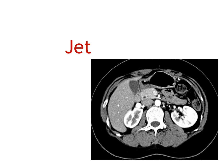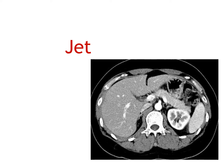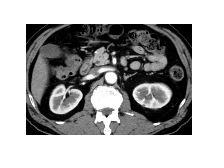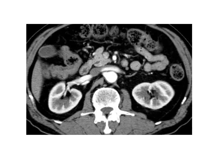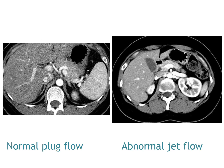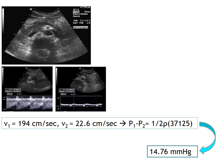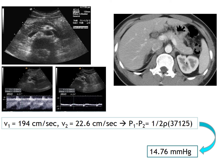Another finding we may see in nutcracker syndrome is the jet phenomenon of contrast-opacified venous flow across the aorto-mesenteric portion when scrolling through early-phase contrast-enhanced CT images. In normal CT, we see smooth movement of contrast along the dependent portion of the left renal vein — this is normal plug flow. Abnormal jet flow is easily distinguishable. In one patient with very high flow velocity of 194 cm/sec and a calculated pressure gradient of almost 15 mmHg, CT shows a clear jet phenomenon, allowing diagnosis of nutcracker syndrome without venography.